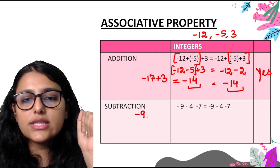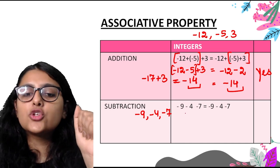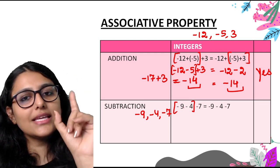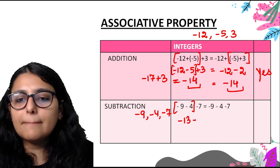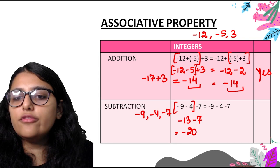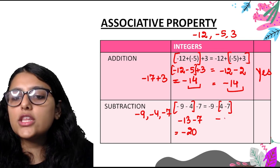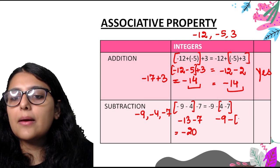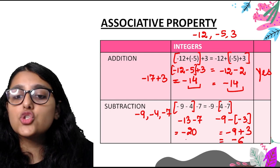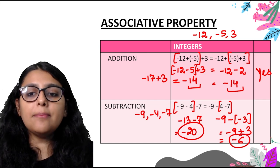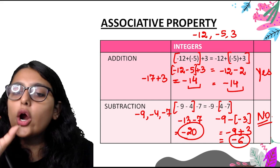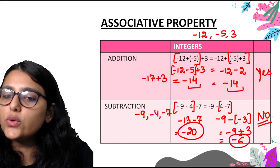For subtraction with three integers: minus 9, minus 4, and minus 7. Grouping minus 9 and minus 4 first: two negatives add, giving minus 13; then minus 13 minus 7 equals minus 20. Changing grouping: solving minus 4 minus 7 first gives minus 3 (since 7 minus 4 equals 3 with negative sign), then minus 9 plus 3 equals minus 6. Minus 20 and minus 6 are not equal, so no, the associative property does not hold true for subtraction of integers.